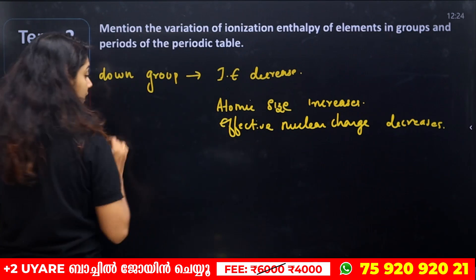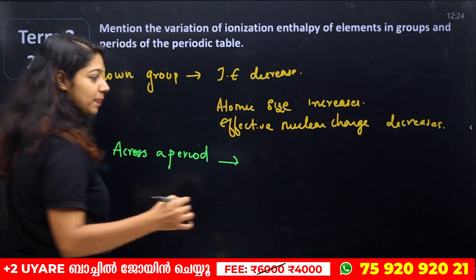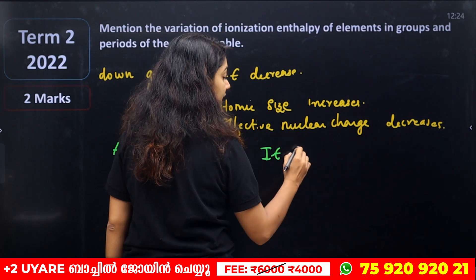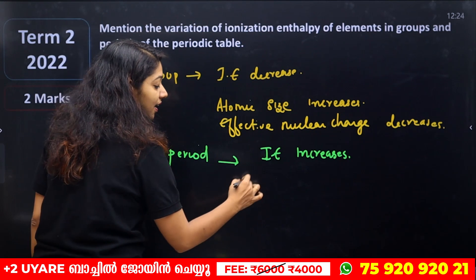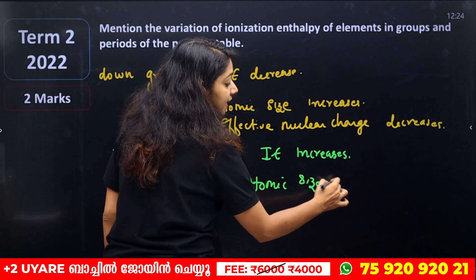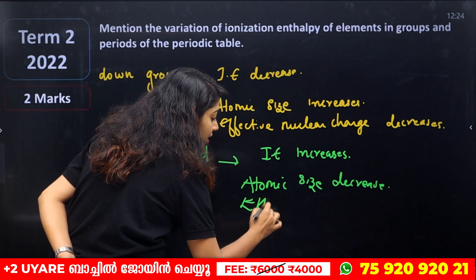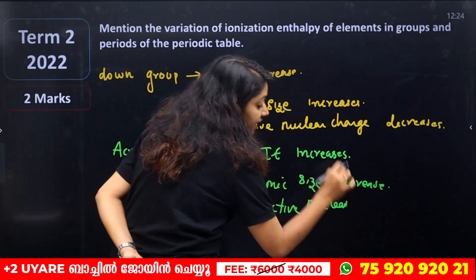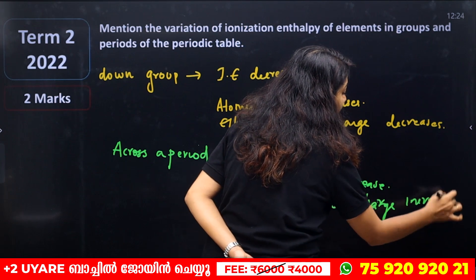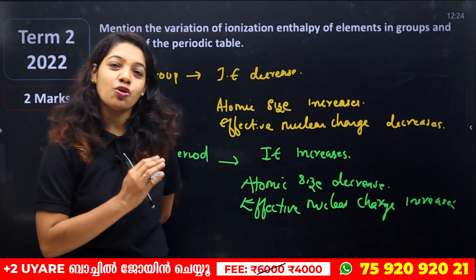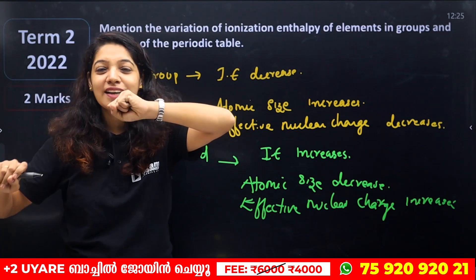Across a period, ionization enthalpy increases — just the opposite reason: atomic size decreases from left to right and effective nuclear charge increases, so more energy is needed to remove electrons.